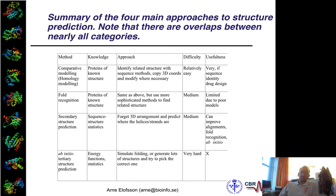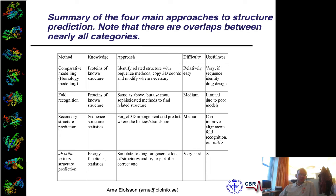For historical reasons, when you talk about structure prediction, you have often talked about four different categories. Over the last 20 years, they are not always that easily distinguished from each other, so they are kind of overlapping sometimes. But anyway, they are good to have as a historical reference.